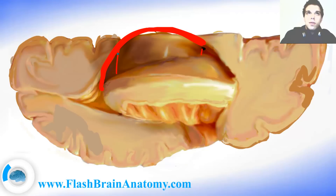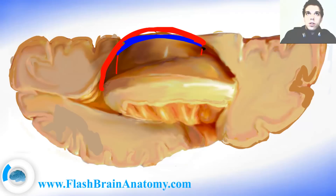Then there is a very thin membrane called the telachoroidia, connecting the thalamus with the fornix.